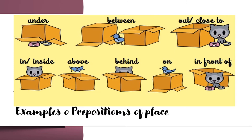Another preposition of place is 'under'. In this picture, the cat is under the box. Between — the bird is between the boxes. Out — the cat is out of the box.